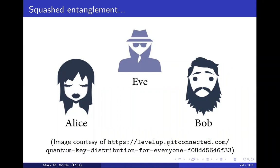In the last few lectures, we started getting into the resource theory of entanglement, the operational tasks of entanglement distillation and entanglement dilution. We talked about concrete examples of entanglement measures, such as entropy of entanglement for pure states, entanglement of formation for general mixed states. We talked about logarithmic negativity, relative entropy of entanglement, and range relative entropy. We talked about relations between them. I gave you a MATLAB program that can compute the range relative entropy.